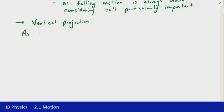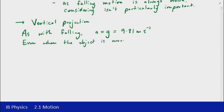So the same as with falling, the acceleration due to gravity is going to be the value of A. So A is going to be equal to G, which is equal to 9.81 meters per second squared. There's a point to note here that sometimes confuses people, and that is that even when the object is moving up, it's still actually accelerating down.